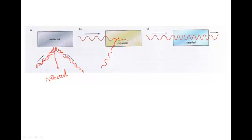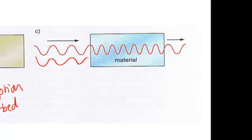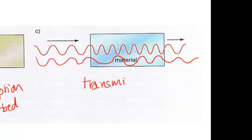This is called absorption — the wave is being absorbed and the energy is being absorbed by the material. Another thing that can happen is the electromagnetic wave can go straight through the material and out the other side. It's not reflected, it's not absorbed, but it travels through the material — and that's called being transmitted, or transmission.